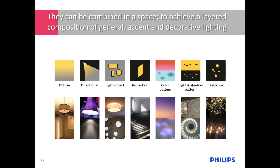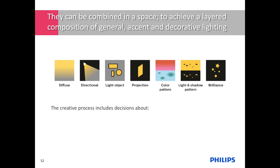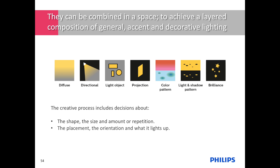These light effects can be combined in a space to achieve a layered composition of general, accent, and decorative lighting. The designer gives form and meaning to the light effects by making decisions about three clusters of characteristics: first, the shape of the light effect — is it a pool, scallop, linear, or spotlight? What is the size, amount, and is there repetition? Second, the placement in space — is it on a high or low level? What is the orientation — upwards, downwards, multi-directional, horizontal, or vertical? And what does it light up? Third, brightness — do we use direct or indirect lighting, visible or invisible luminaires, and what materials and finishes interact with the light?